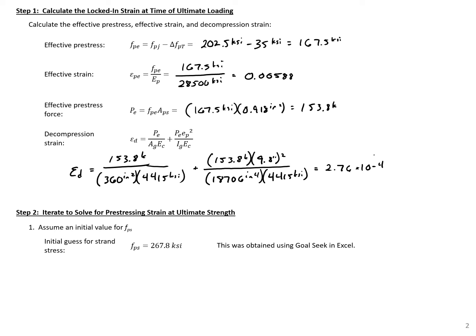Our next step now is we need to iterate to solve for our pre-stressing strain at ultimate, and the first thing that we need to do is assume an initial value for F sub PS. If we're doing this by hand, a starting point of around 260 KSI is a good reasonable starting point. I set up an Excel sheet and then use Goal Seek, so I'm going to use a good first guess in this example so we don't need to iterate. The good first guess that I'll use is F sub PS equal to 267.8 KSI.